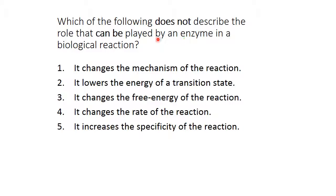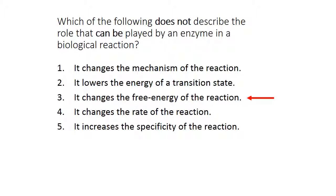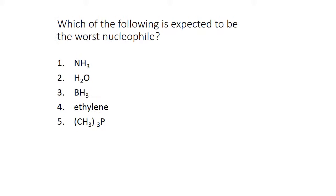Which of these does not describe the role that can be played by an enzyme in a biological reaction? A catalyst does not change the beginning or ending energy of a reaction. The only thing a catalyst does is lower the energy of a transition state, possibly by changing the mechanism. If it lowers the energy of a transition state, it will change the rate of the reaction. It can also change the specificity of a reaction. But it cannot change the energy of the reactant or the product. So the only thing that does not describe what an enzyme does is changing the free energy of the reaction.